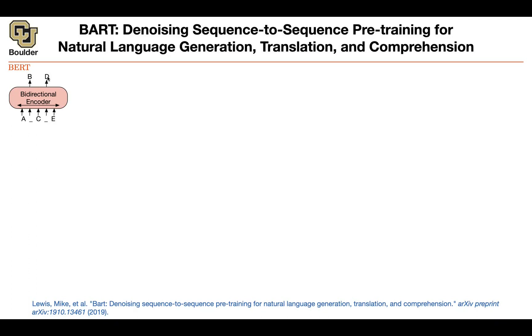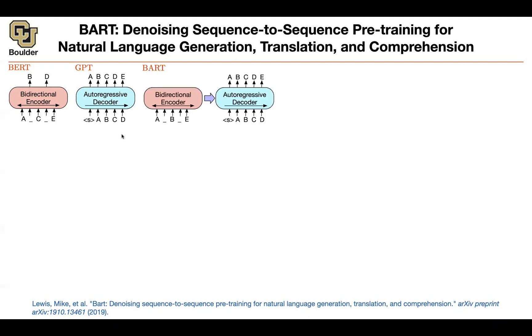That's going to give you a training loss. For GPT-type models, you're always predicting the next word. If I give you the beginning of the sentence and A, you need to give me B. If I give you S, A, and B, you need to give me C.